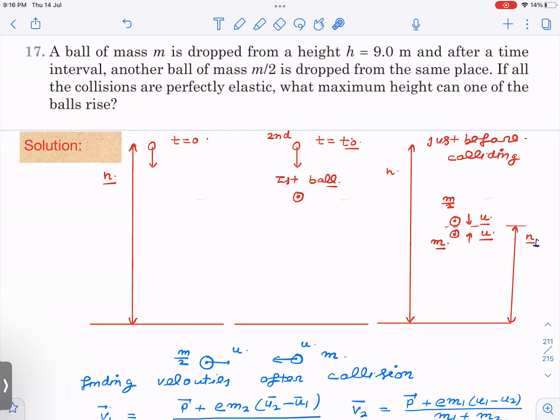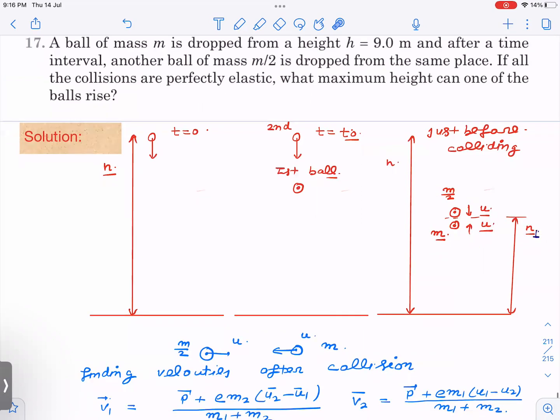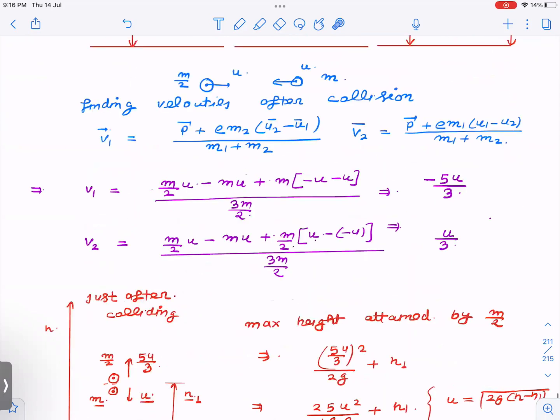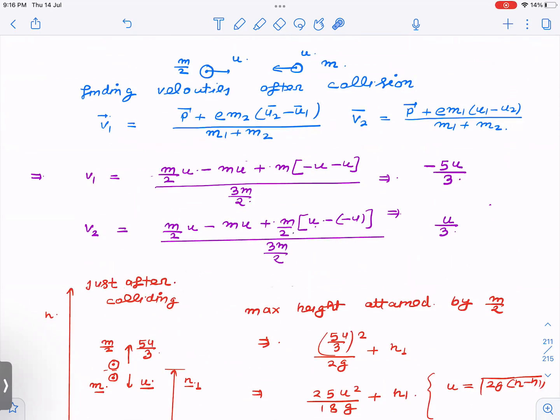So to calculate velocity after collision, I am going to use these two formulas. These formulas you can very easily derive also. These formulas will come from one momentum equation and one coefficient of restitution equation - velocity of separation divided by velocity of approach.